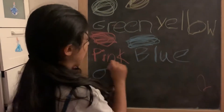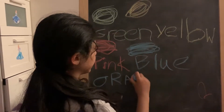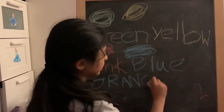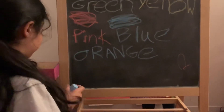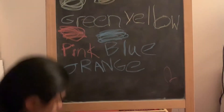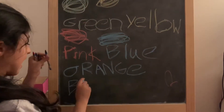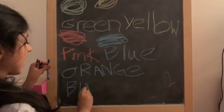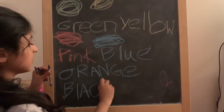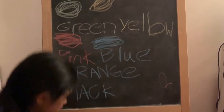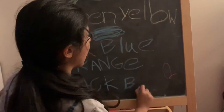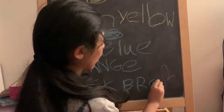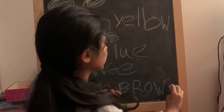I'm going to write this down. Orange: O, R, A, N, G, E — for orange. Now we're going to say black: B, L, A, C, K — for black. Now we are going to say brown: B, R, O, W, N.